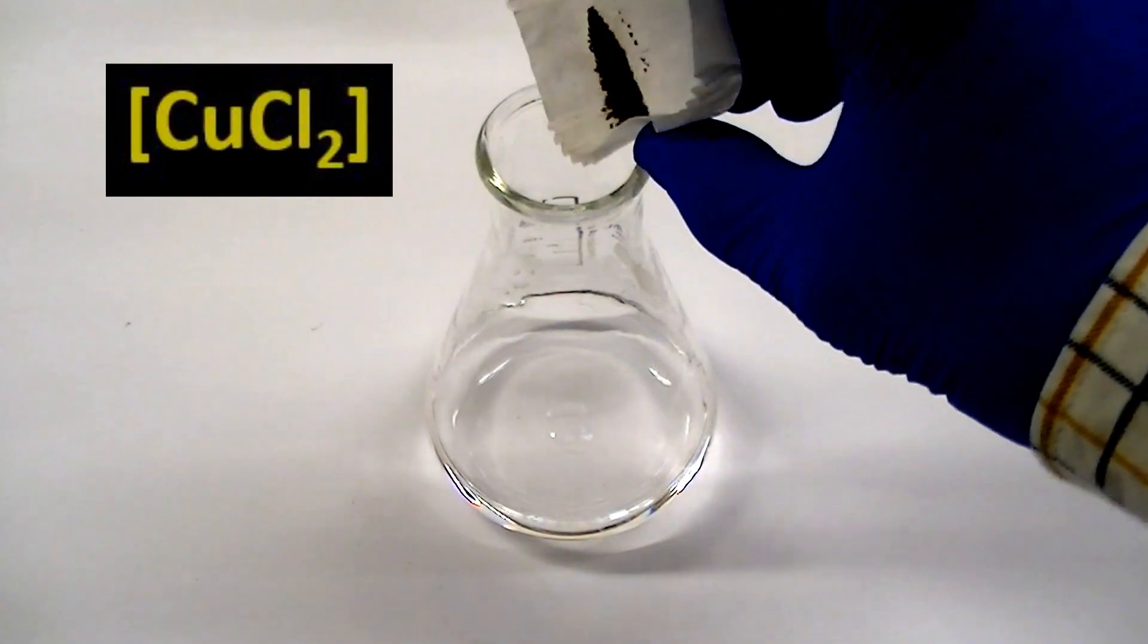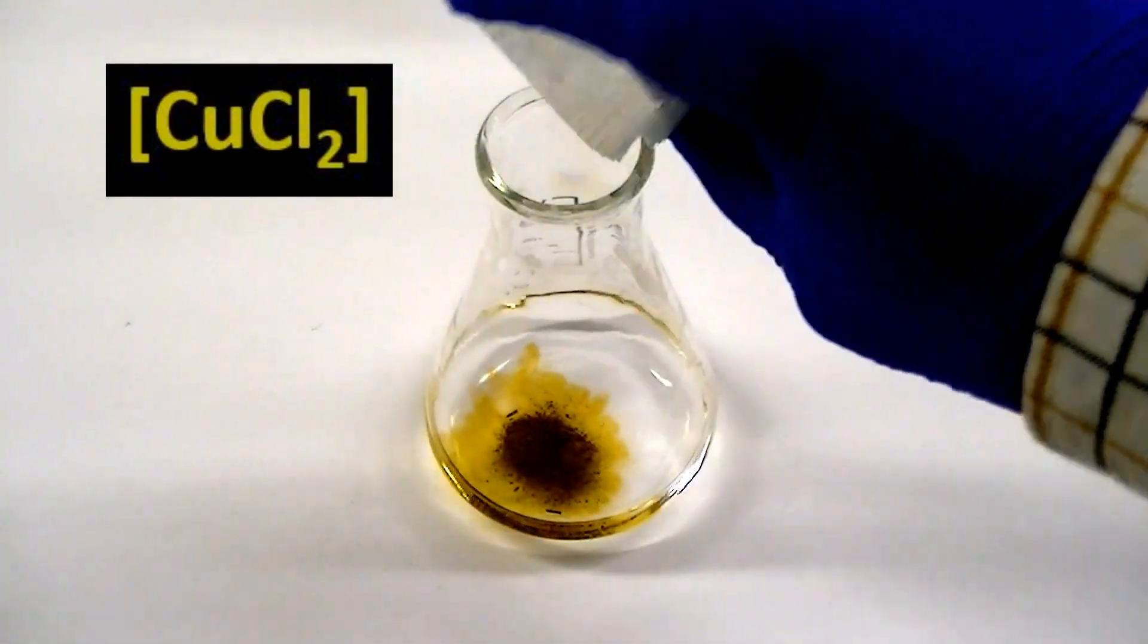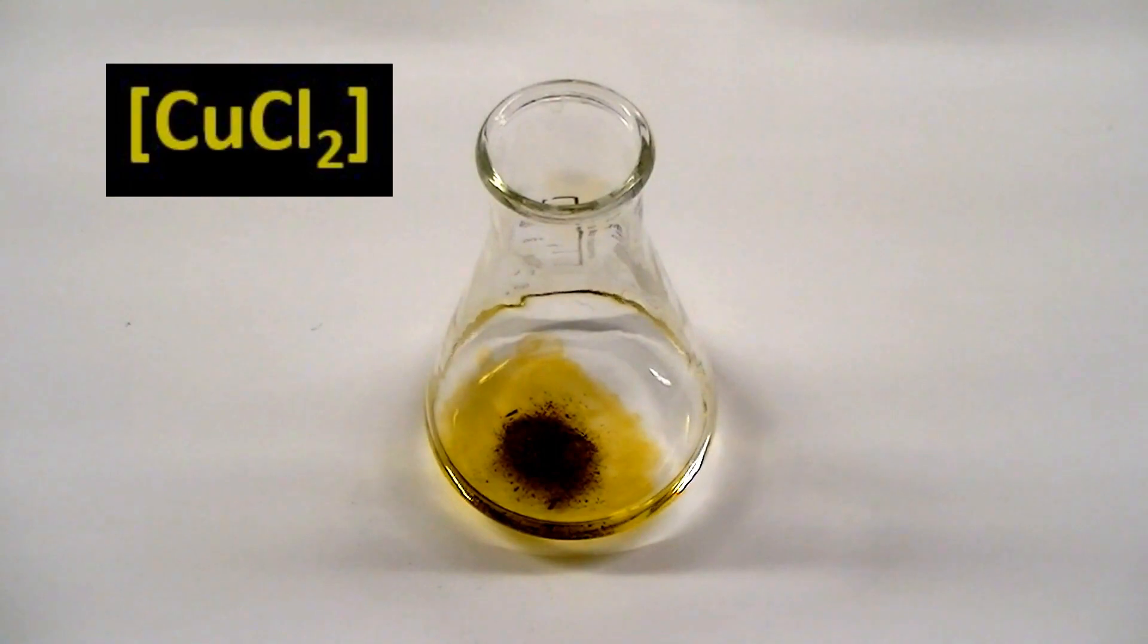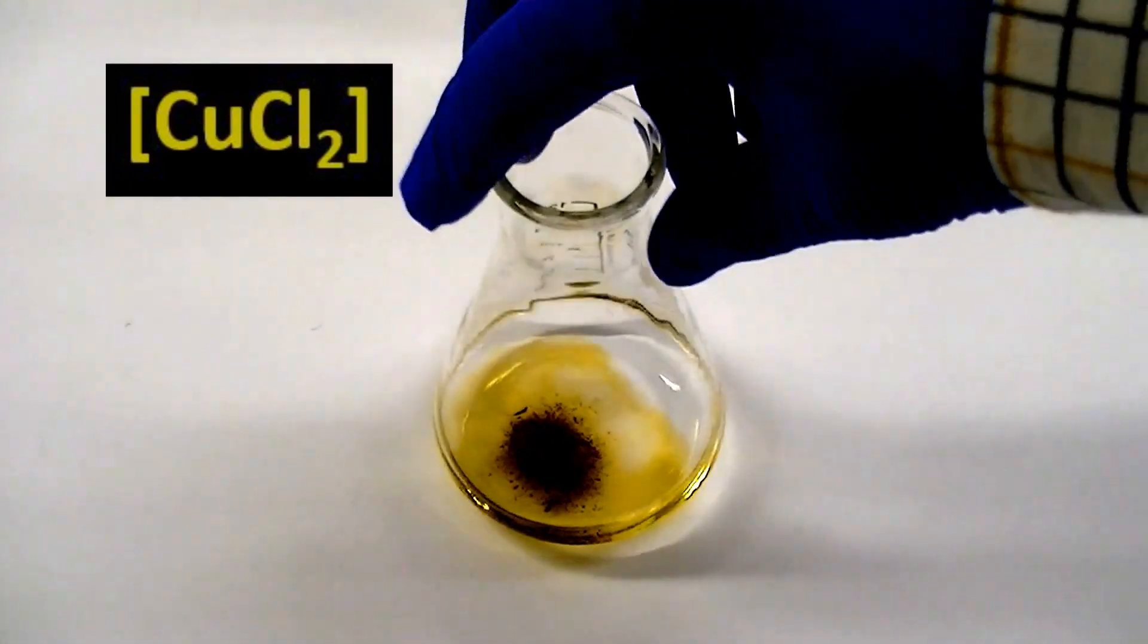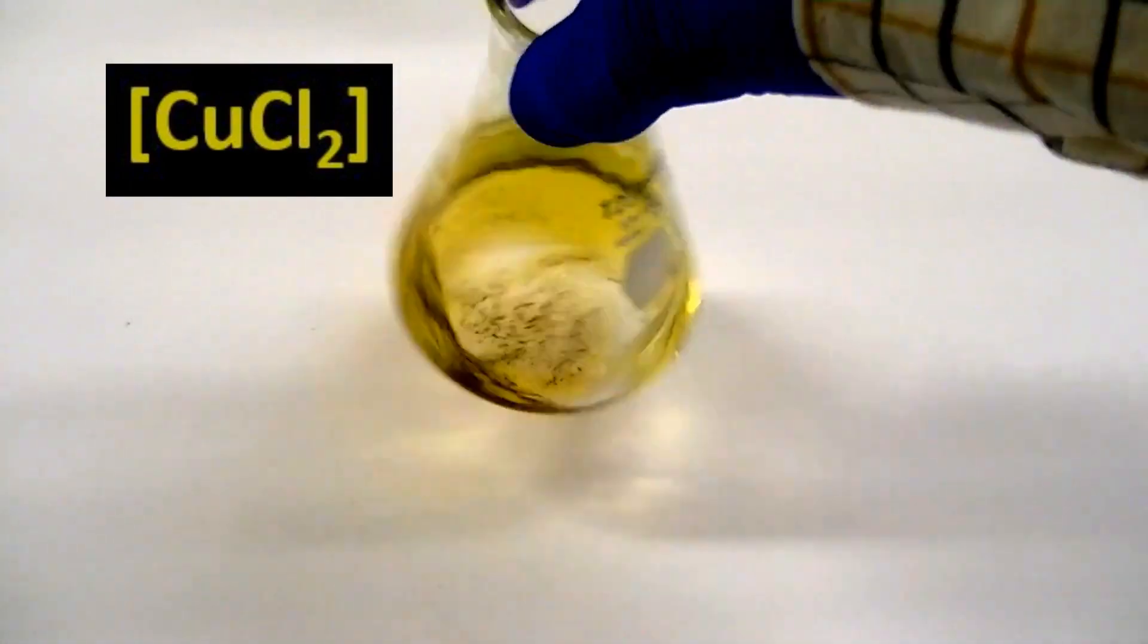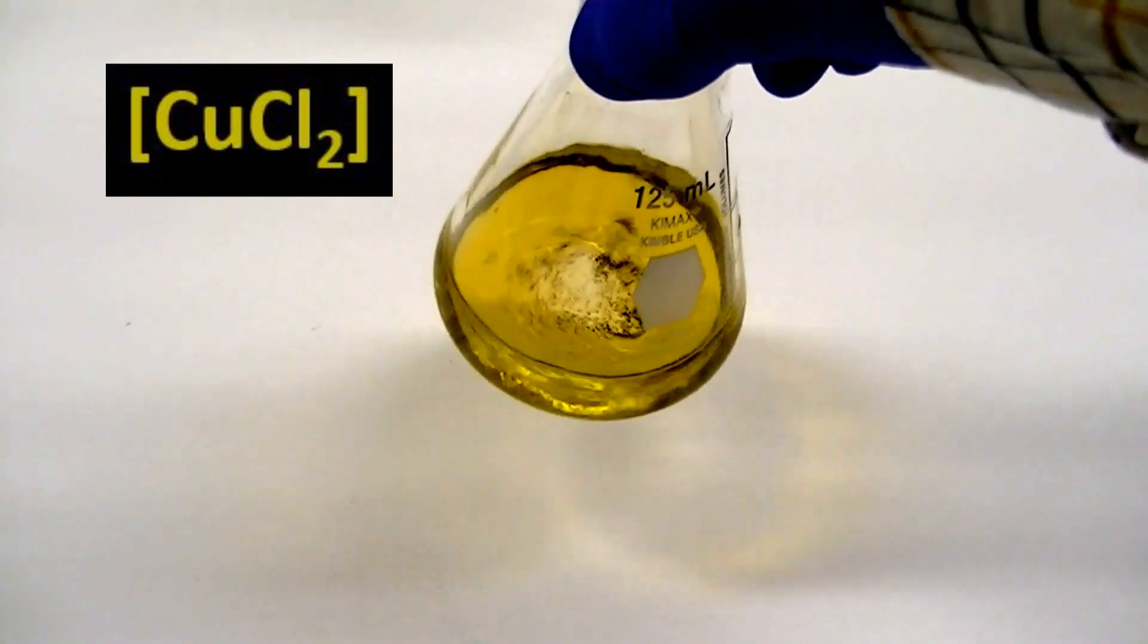To prepare the system, we simply dissolve anhydrous copper II chloride in acetone. The resulting solution has a dark yellow-green color, which is indicative of a dichloro-copper II complex.